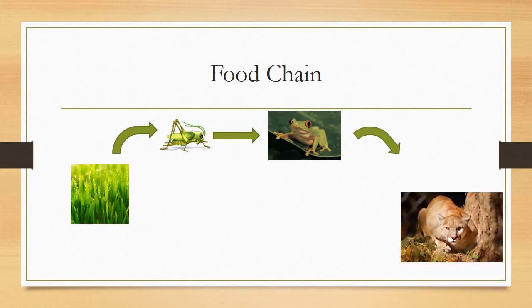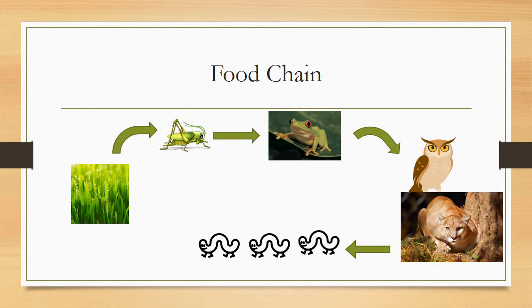Tertiary consumers are the largest. They eat the secondary consumers, or if they want a light snack, they can have the primary consumers. When anything dies — whether it's a tertiary consumer, a producer, a primary consumer, or a secondary consumer — the decomposers come in. They decompose the dead tissue of tertiary, secondary, primary consumers, and even the producers. When they decompose it, it turns into soil and sprouts the producers. And that is the circle of life.